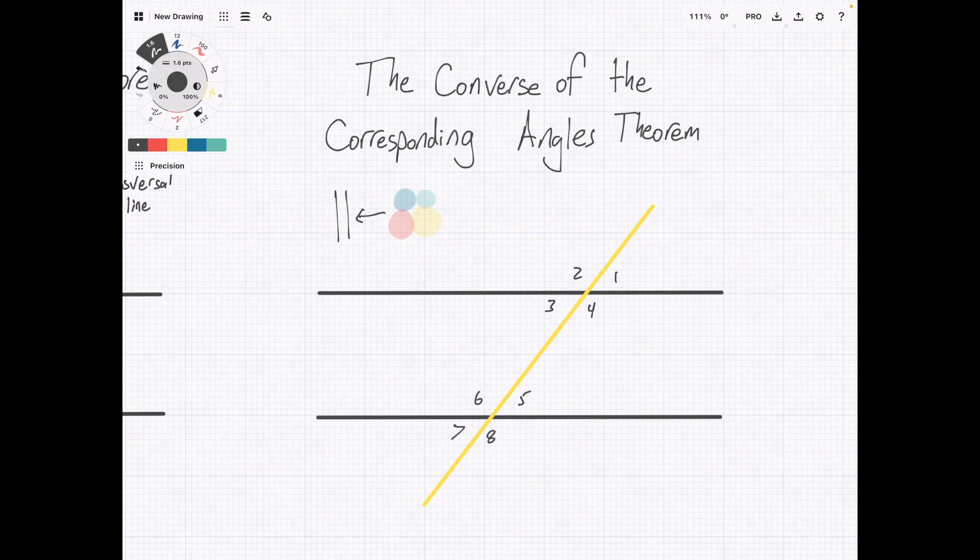So, if somehow you were able to figure out that, let's say, angle one and angle five were congruent and angle four and angle eight were congruent, then what you could do is you could infer that these lines are parallel.